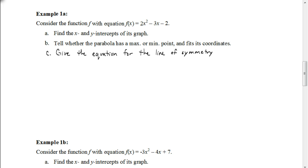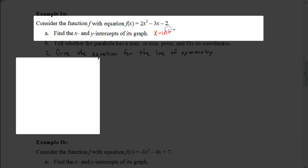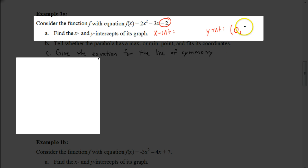Consider the function f of x equals 2x squared minus 3x minus 2. We want to find the x and y intercepts, determine if it has a maximum or minimum point and find its coordinates, and give the equation for the line of symmetry. Starting with the y-intercept — that's the easiest one. The y-intercept is whatever the c value is, which here is negative 2. So the y-intercept is the coordinate (0, negative 2).